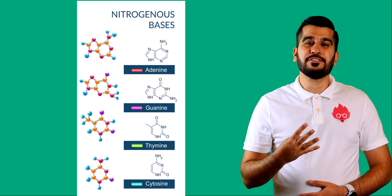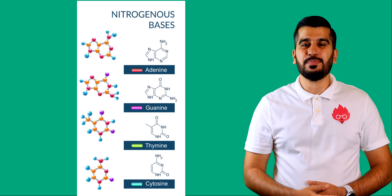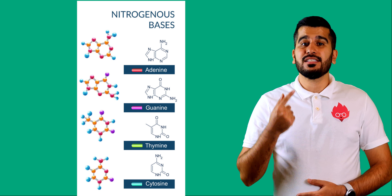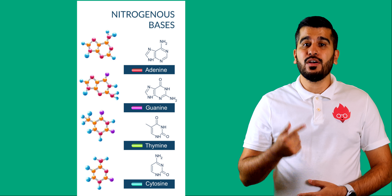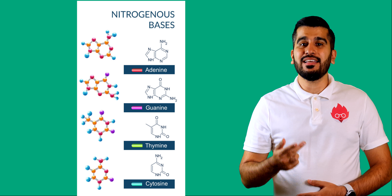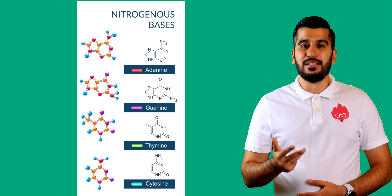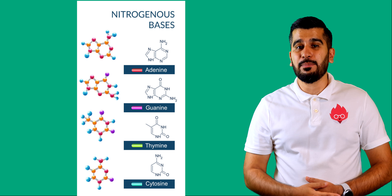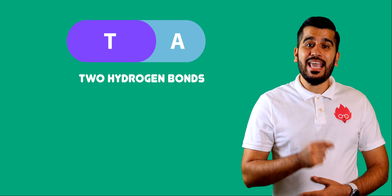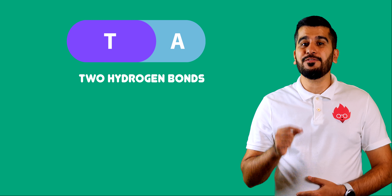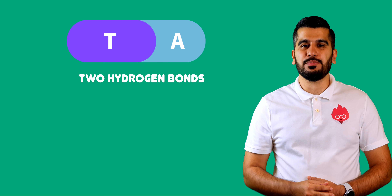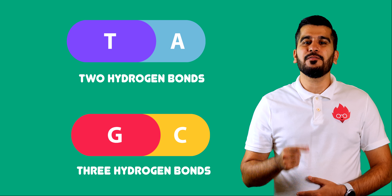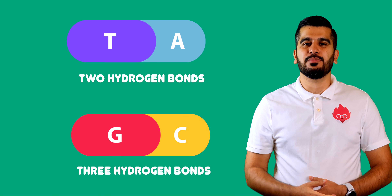There are four different nitrogenous bases: adenine, cytosine, guanine, and thymine. These bases form specific pairs where A binds with T via two hydrogen bonds, and G binds with C via three hydrogen bonds.